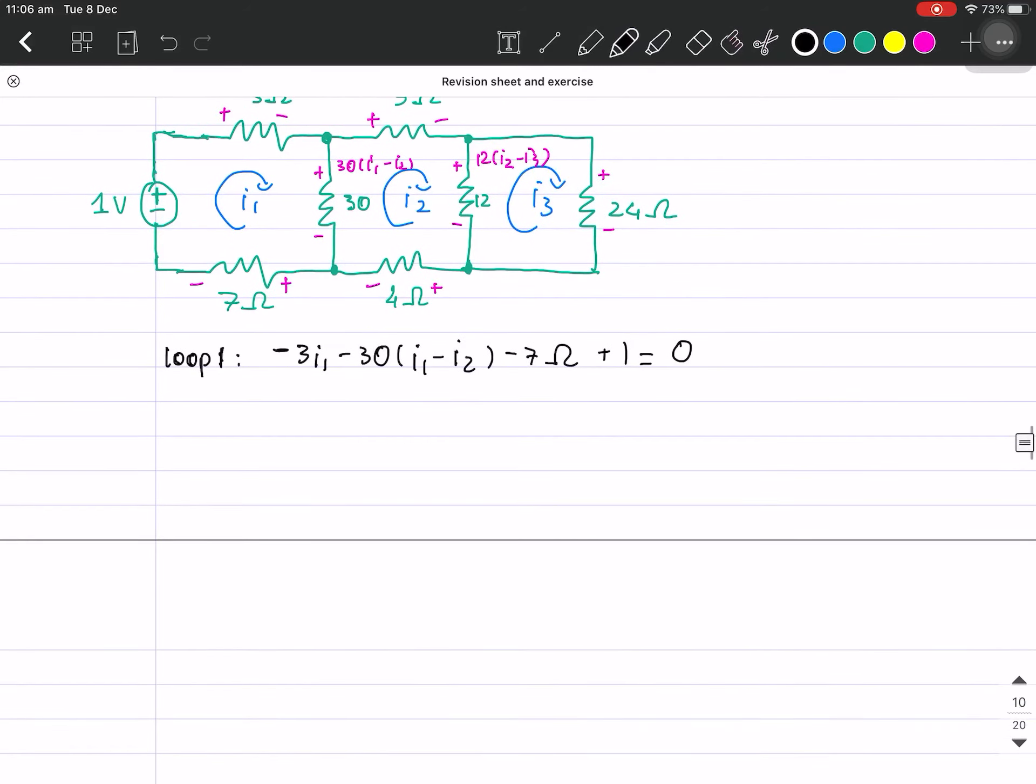I'm gonna work that loop out. So I have this, this, and this. Oh I forgot to do that, I'm sorry. That's equal to 40. Okay, so negative 40i1 plus 30i2 is equal to negative 1.